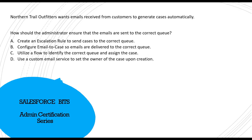Options C and D are not a good fit. A flow could potentially assign to the correct queue, but not create cases from emails. Option D — using a custom email service to set the owner upon case creation — is also not what this question asks. So the answer lies between A and B.